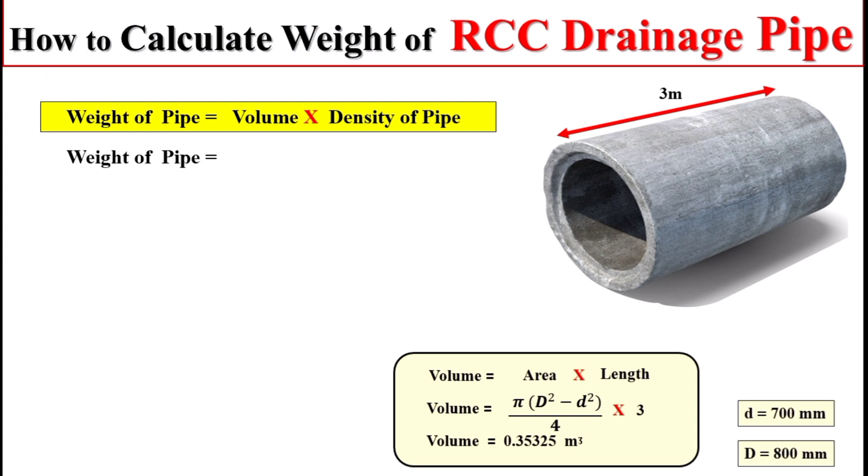Now dear students, we can easily calculate total weight of this pipe if we multiply total volume of this pipe with the density of pipe, so we can get the total weight of pipe.